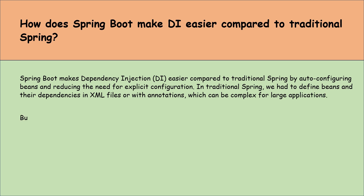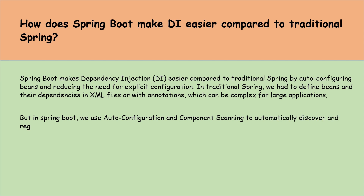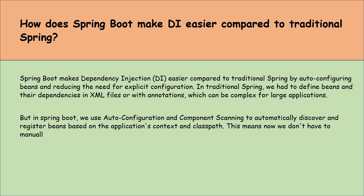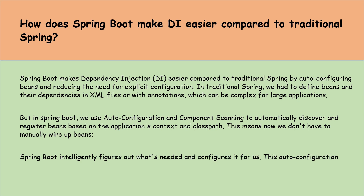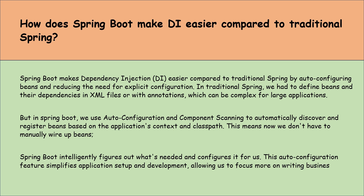But in Spring Boot, we use auto-configuration and component scanning to automatically discover and register beans based on the application's context and classpath. This means we don't have to manually wire up beans — Spring Boot intelligently figures out what's needed and configures it for us. This auto-configuration simplifies application setup, allowing us to focus more on writing business logic rather than boilerplate configuration code.